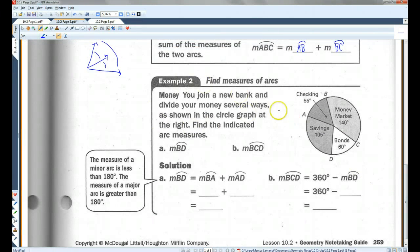Example 2, you join a new bank and divide your money several ways. As shown in the circle graph at the right, find the indicated arc measures. The measure of arc BD. Now, there's only two letters, so we're looking at the minor arc, the smaller arc. Arc BD...